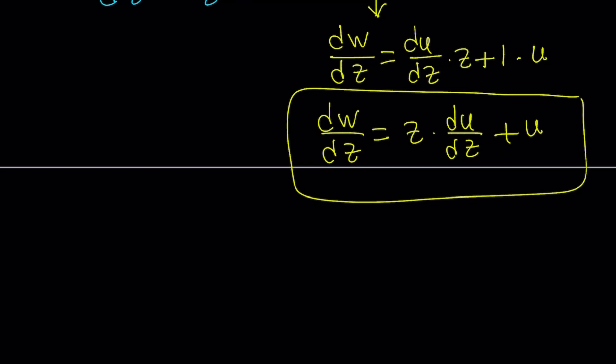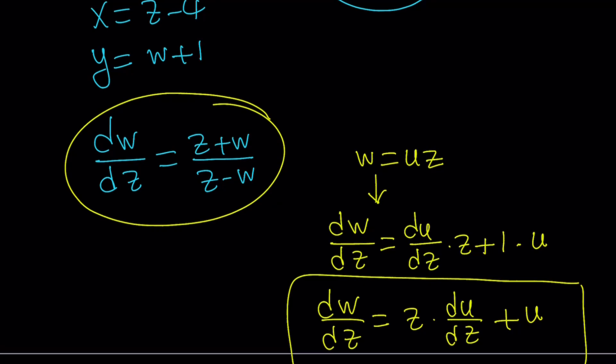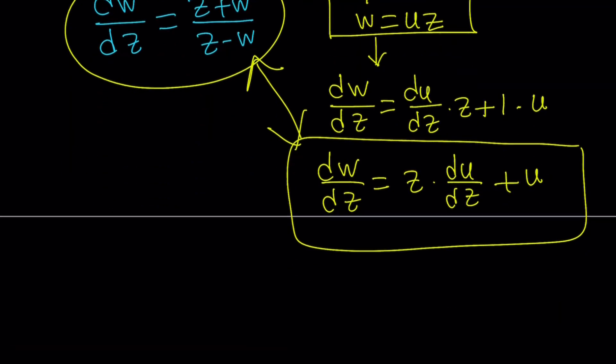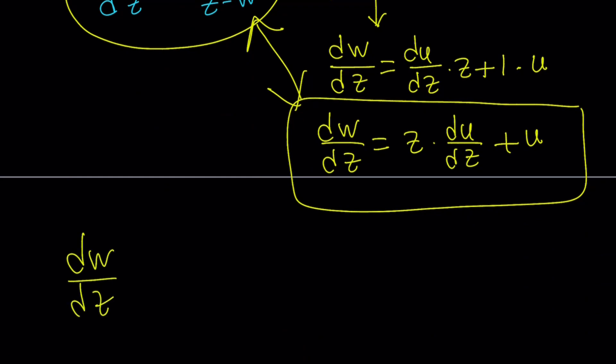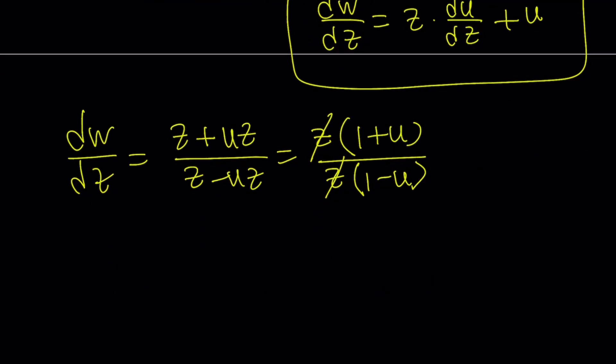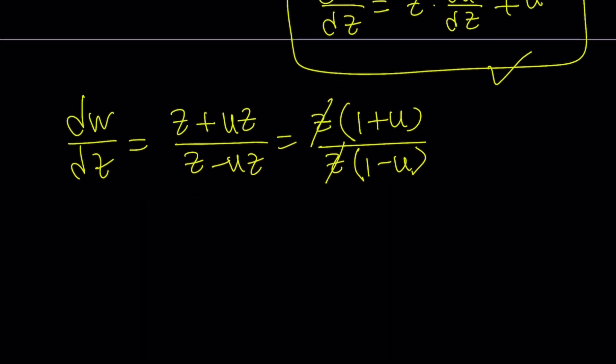So, that is my expression for dw over dz, but I also have this for dw over dz, so they are equal. Let's go ahead and set those equal to each other. But at the same time, I want to use this substitution, so let's go ahead and replace w with uz first. So, start with dw over dz, and now we're going to replace w with uz here and here. And then I'd like to factor the z out. That gives me 1 plus u over z times 1 minus u. And z cancels out, and we end up with something like this.